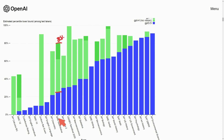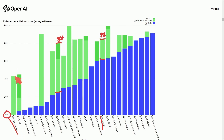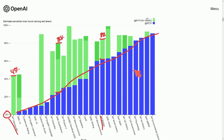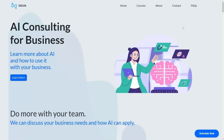That means chat GPT-4 is able to do the GRE quantitative test better than 80% of people. For AP Biology we went from 60% to over 85%. Another wild one: chat GPT-3.5 was around the 0th percentile for the AP Calculus exam, but GPT-4 is now over the 45th percentile. GPT-4 has really added improvement across the board, with over improvement on at least half the tests, showing how much more powerful this model is.